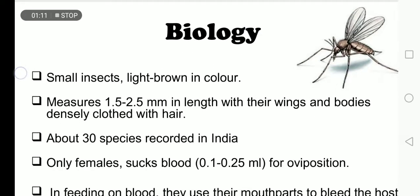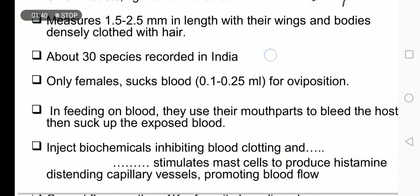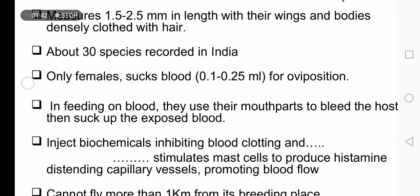These are small insects, mostly light brown in color as visible in the diagram. Their size varies from 1.5 to 2.5 mm in length, with their wings and bodies densely covered with hair. About 30 species are recorded in India. Only the female sucks blood — 0.1 to 0.25 ml — for oviposition.